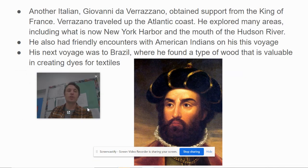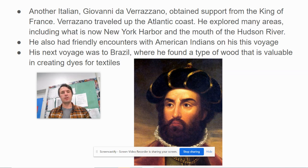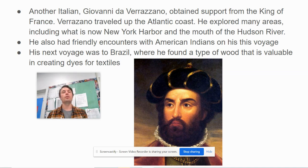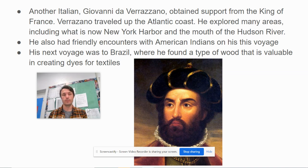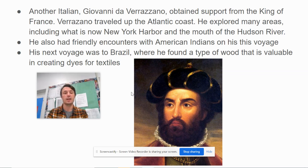Another Italian, Giovanni da Verrazzano, obtained support from the king of France. Verrazzano traveled up the Atlantic coast. He explored many areas, including what is now New York Harbor and the mouth of the Hudson River. He also had friendly encounters with American Indians on this voyage. His next voyage was to Brazil, where he found a type of wood that is valuable in creating dyes for textiles.